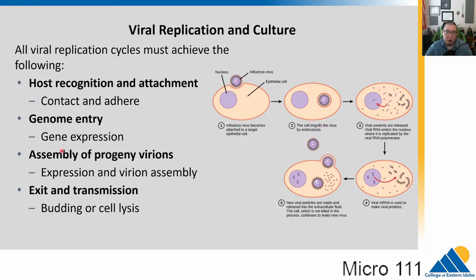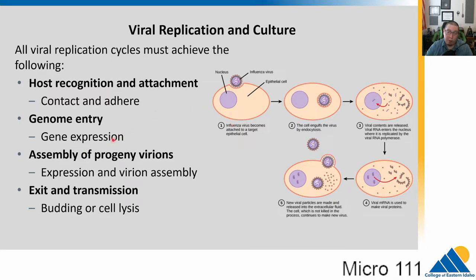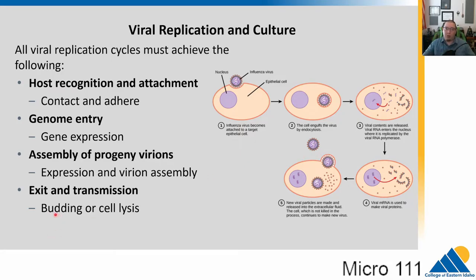Those genes are going to direct the assembly of new virions. They're basically going to hijack the cell and direct it to make new viral particles. Then once those viral particles are made, the virus needs to exit and transmit to a new cell or new host. This can happen by budding, where it buds off with a little bit of the membrane, or by cell lysis, where it just bursts the cell and releases the viral particles.